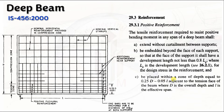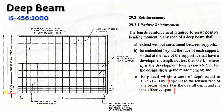The next criteria is that the positive reinforcement shall be placed within a zone of depth equal to 0.25D minus 0.05L adjacent to the tension face of the beam, where D is the overall depth and L is the effective span. This effective span and clear span plays an important role — for positive reinforcement, L is the effective span, not the clear span. In the reinforcement detail, we have a tension zone and a compression zone across the overall depth. Up to the distance calculated by 0.25D minus 0.05L, we have to provide the positive reinforcement.